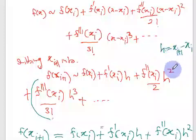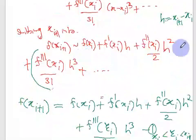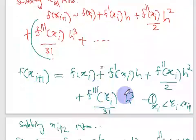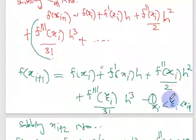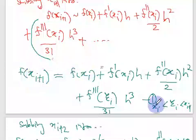Now I truncate the infinite series — I only consider the first three terms. When you truncate, you add an error term. The value xi-bar is some number in between xi and xi plus 1.